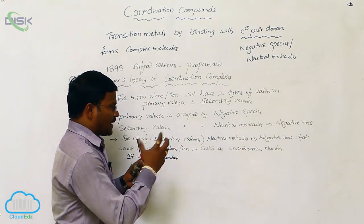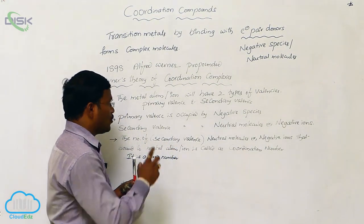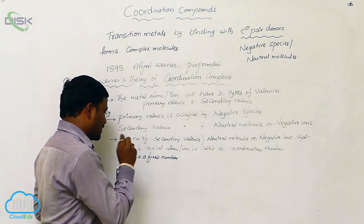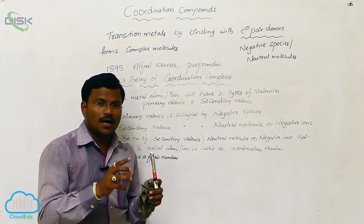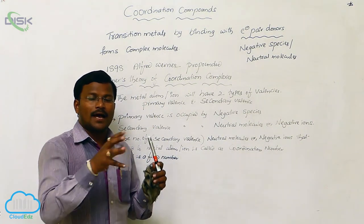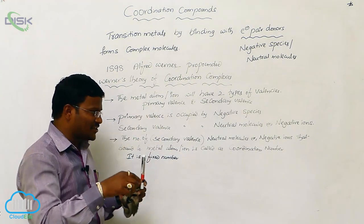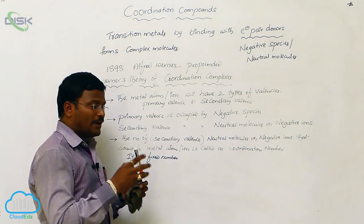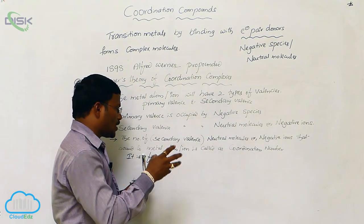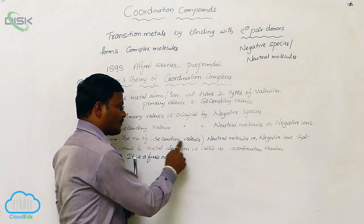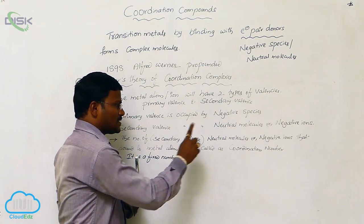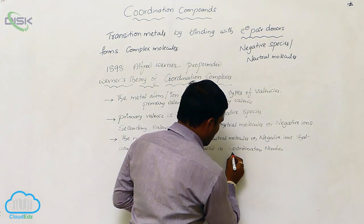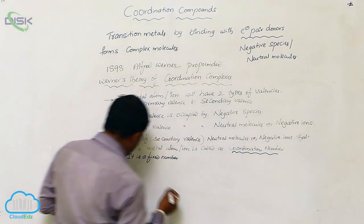The third statement explains coordination compounds: the metal atom or metal ion present inside the coordination sphere (inside the square bracket) will have a fixed number of secondary valences. The secondary valence is also called the coordination number.